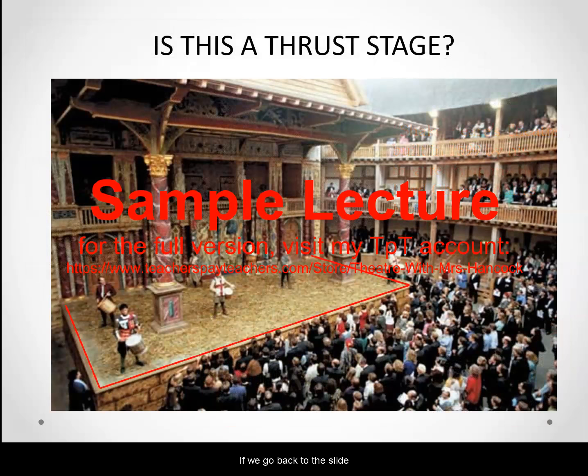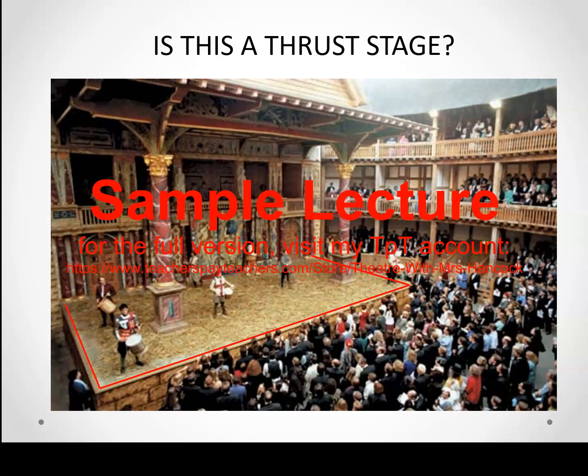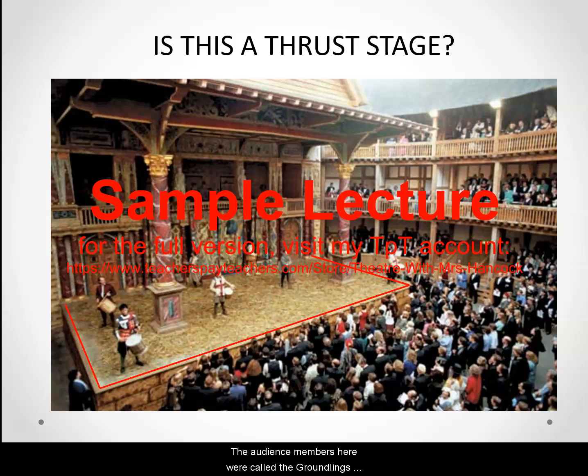If we go back to the slide, you can see there is a thrust because the stage sticks or thrusts out into the audience. Also pictured here is the pit — the area where the people are standing on three sides of the stage. The audience members here are called the groundlings, and their tickets were less costly than those who are seated in the balconies around the outer edge of the house.